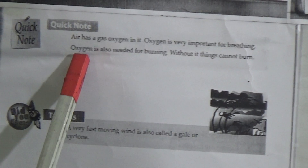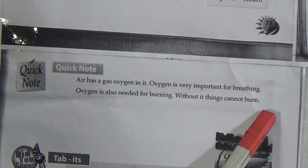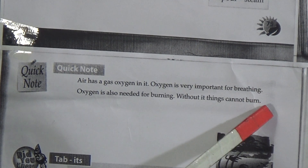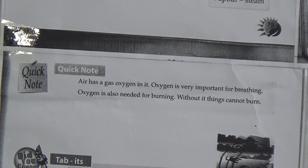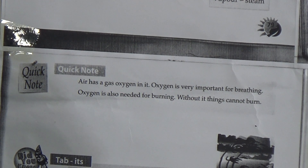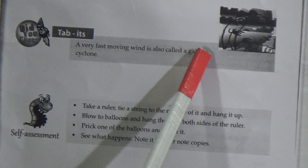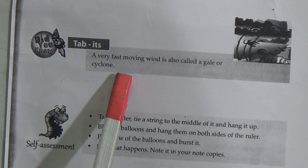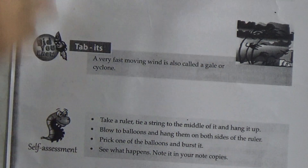Air contains the gas oxygen. Oxygen is very important for breathing. Oxygen is also important for burning — without oxygen, things cannot burn. Every fast moving wind is also called a gale or cyclone.